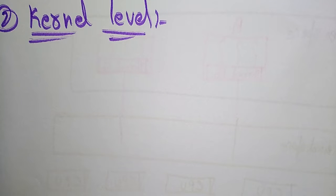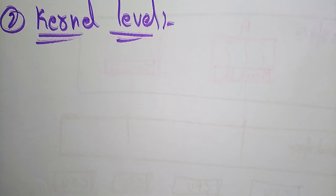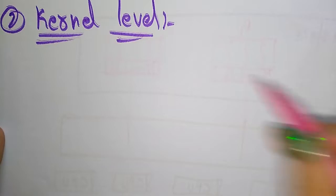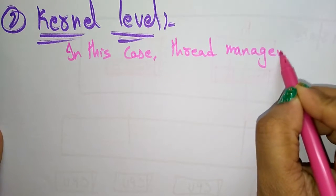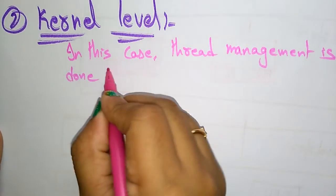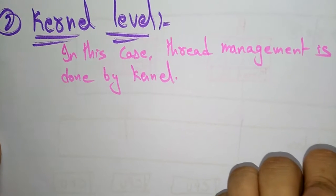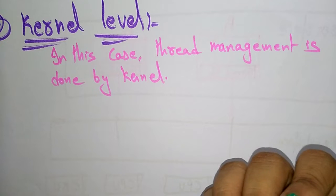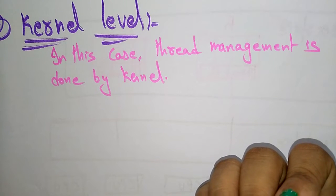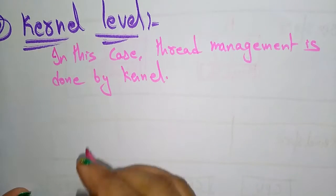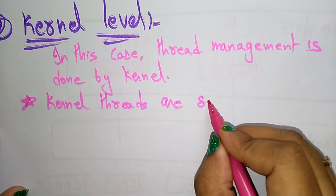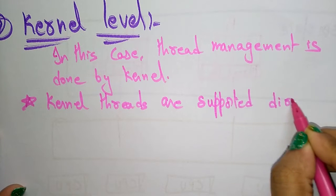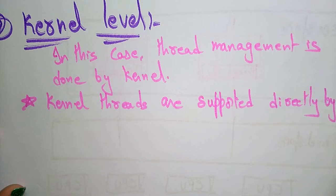Let us continue with the types of threads. In the previous video I explained about the user level. Now coming to the next type of thread: the kernel level. In this case, thread management is done by the kernel only. Whatever threads are present at the kernel level will be managed by the thread management system. Kernel threads are supported directly by the operating system.